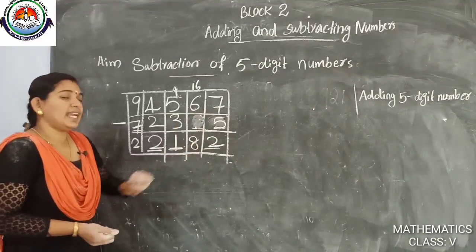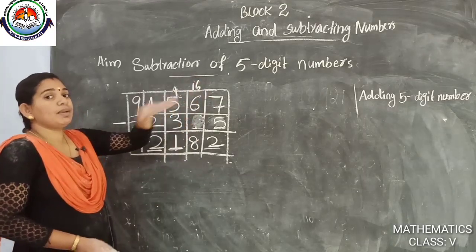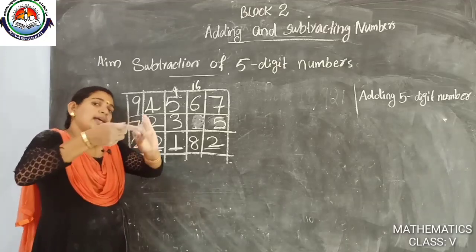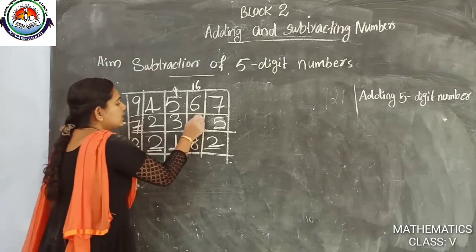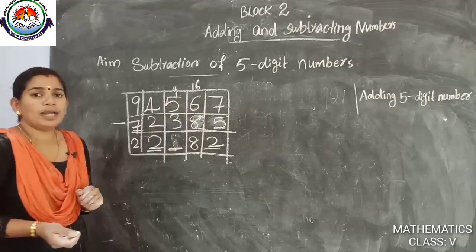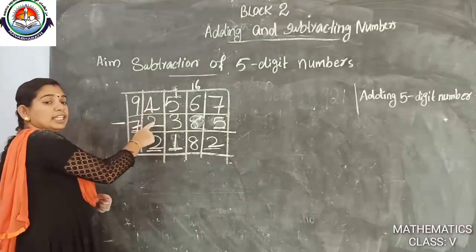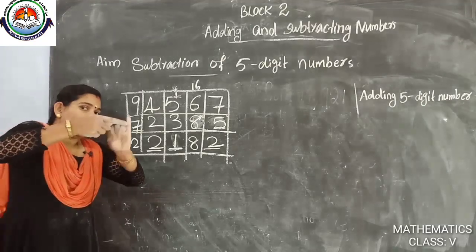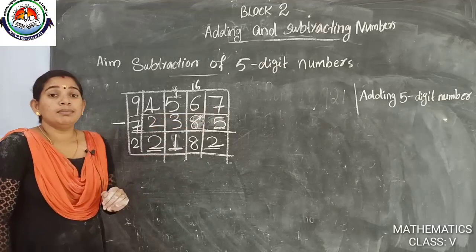For the next missing digit: 6 minus something gives 8. Since 6 is smaller, this becomes 16 by borrowing. 16 minus 8 is 8 — counting from 8 to 16 gives 8 fingers. Having borrowed 1, the next place becomes 4. 4 minus 3 is 1 and 4 minus 2 is 2. Then, which number subtracted from 9 gives a result — counting the fingers gives the missing digit. So we find all the missing digits this way.